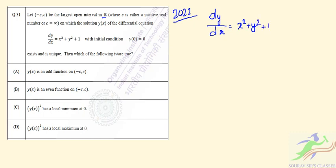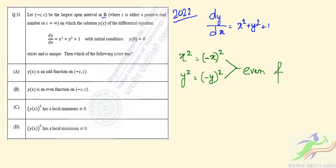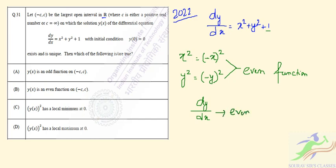Now, x² is the same as (-x)² and y² is the same as (-y)², so both x² and y² are even functions, and 1 is a constant term. Therefore, dy/dx will be an even function.